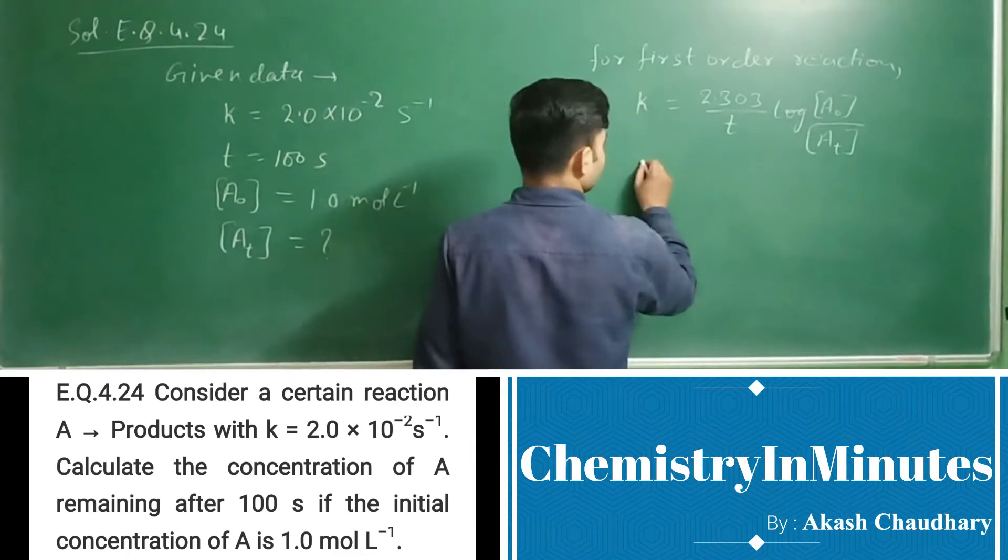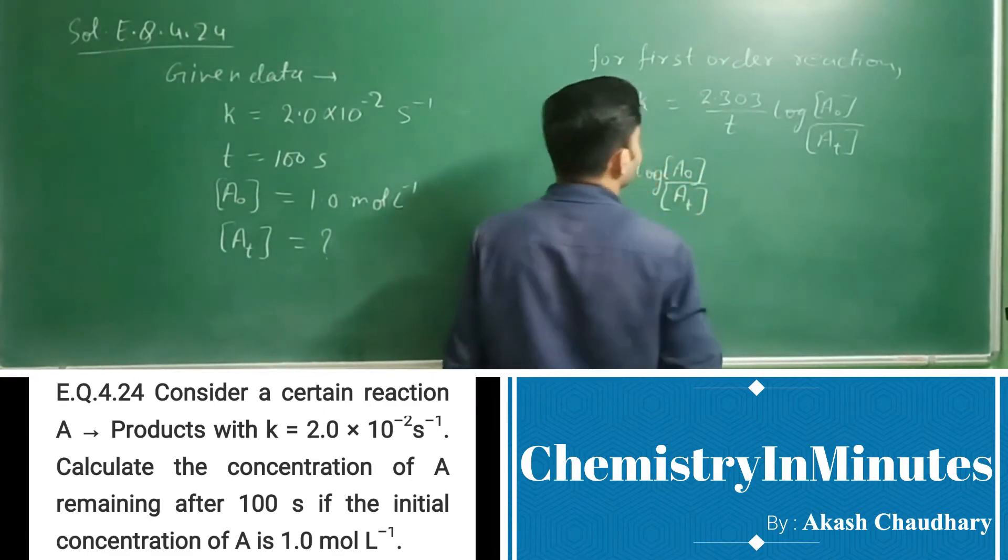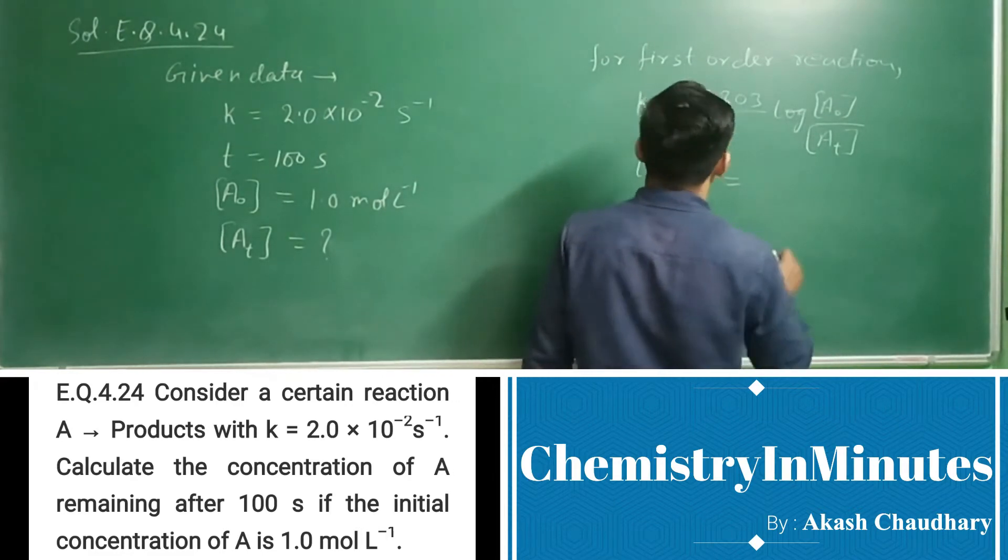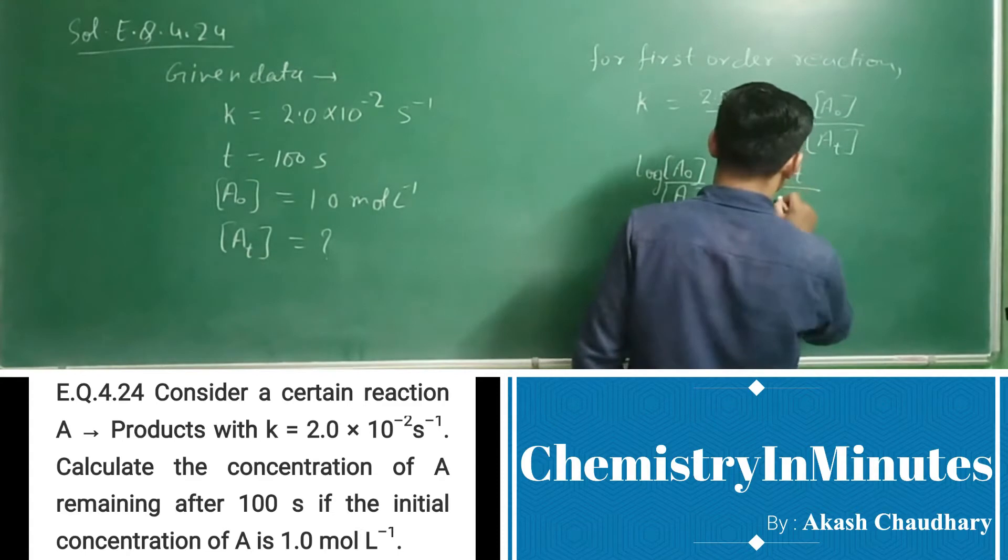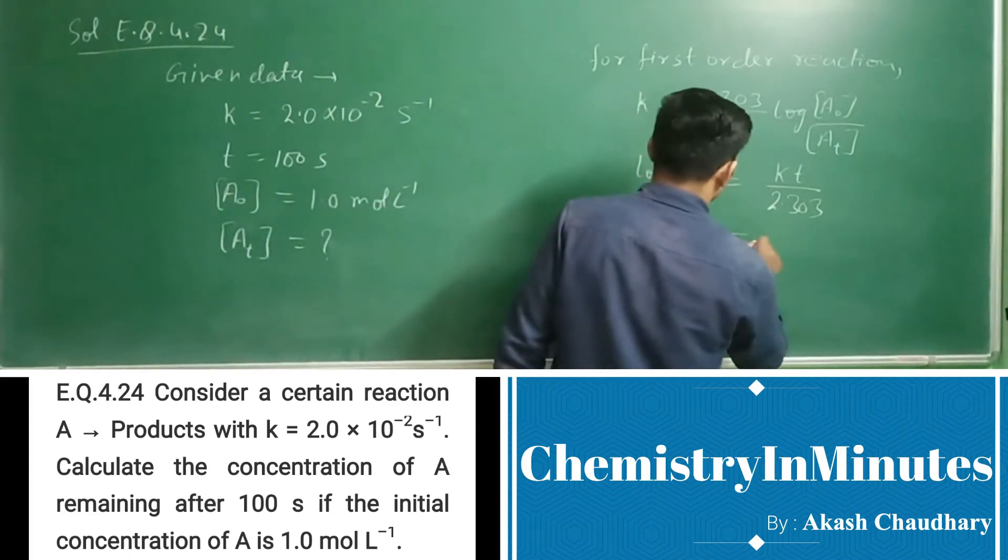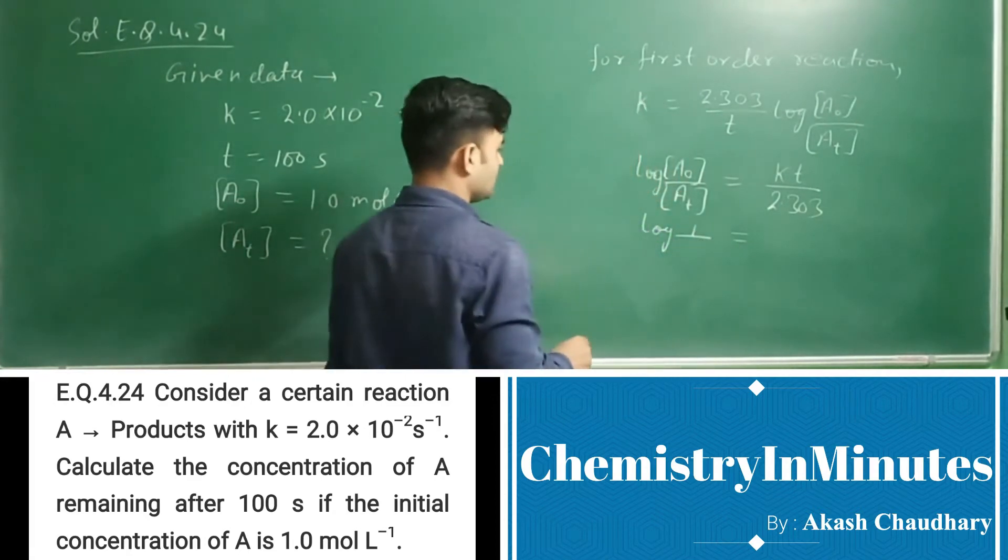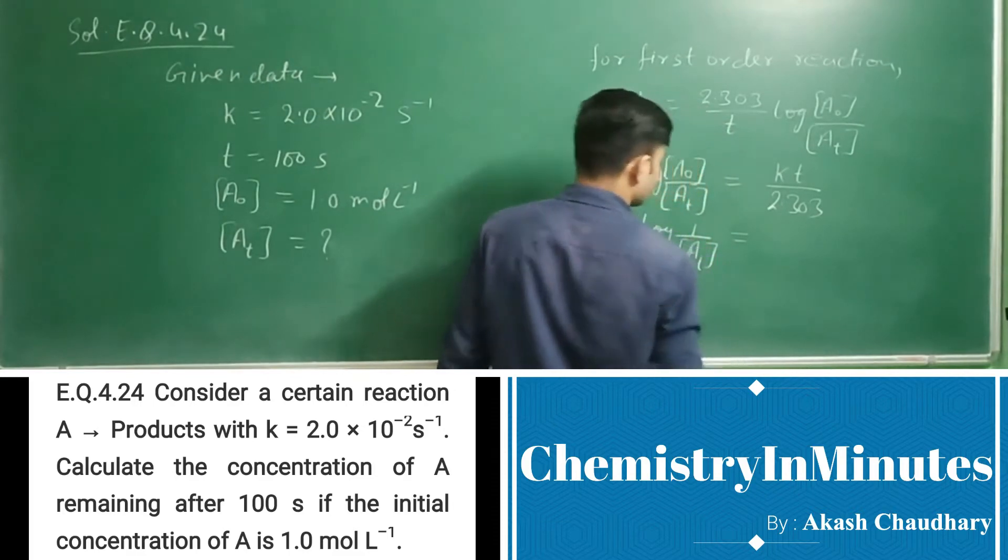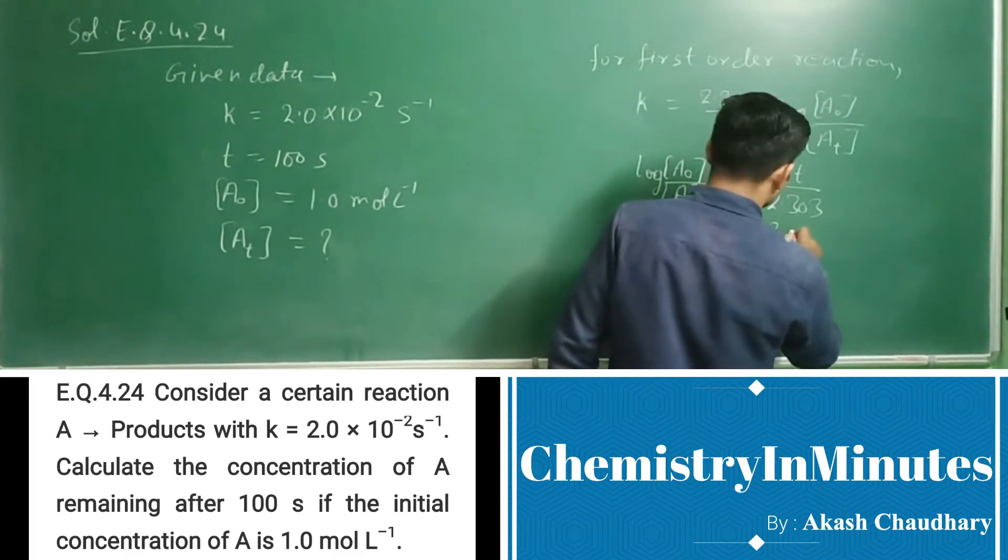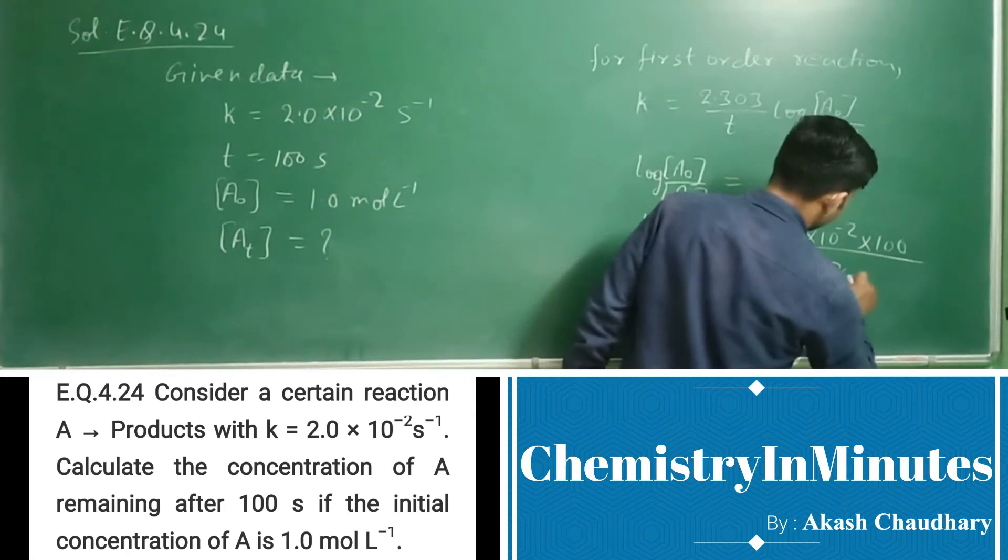From here we can write: log([A]₀/[A]_t) = kt/2.303. Now putting the values: log(1/[A]_t) = 2.0 × 10^-2 × 100 / 2.303.